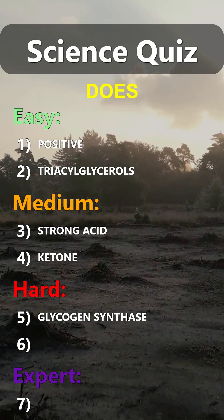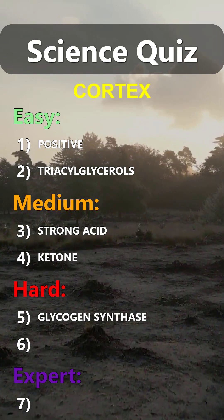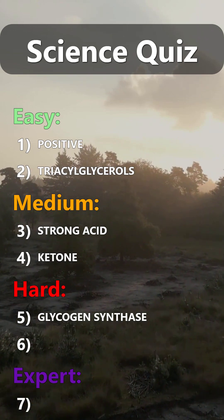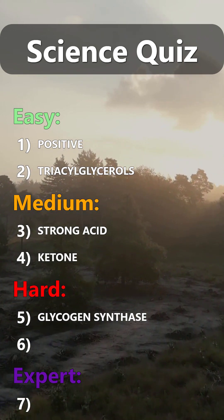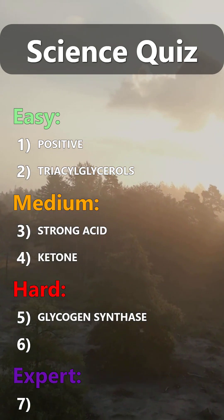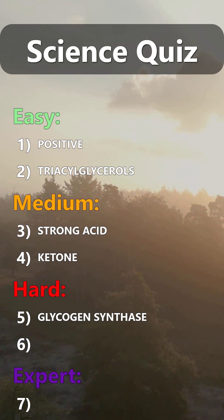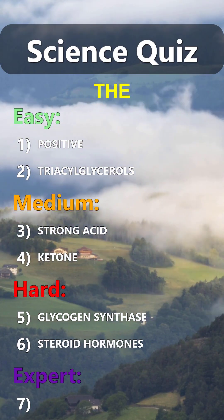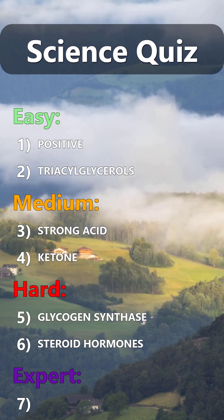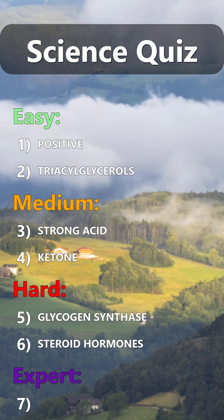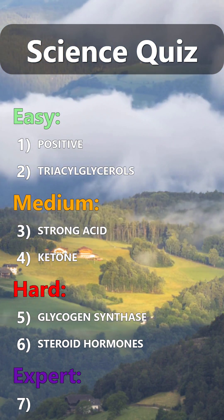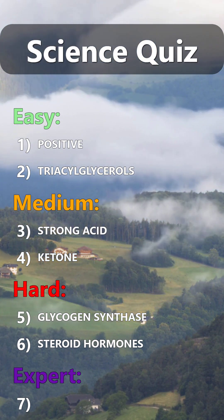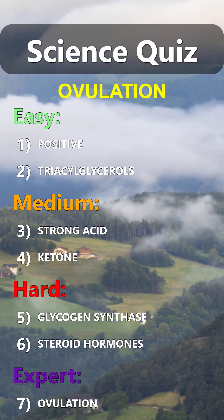What type of hormones does the adrenal cortex release? Steroid hormones. What does the luteal surge cause? Ovulation.